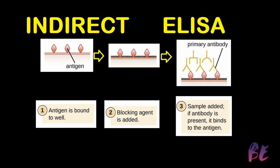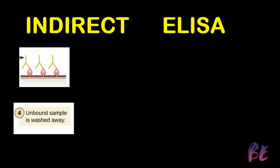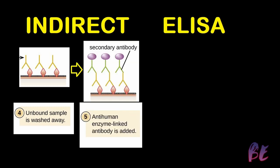Then the sample is added. If an antibody is present in the sample, it will bind with the antigen. Antibodies whose epitope doesn't match with the antigen will not bind. The sample is then washed so that the unbound antibody is washed away. Then the secondary antibody, already conjugated with the enzyme, is added.